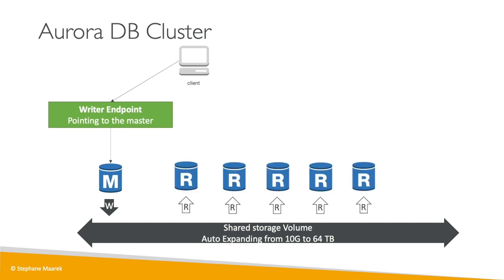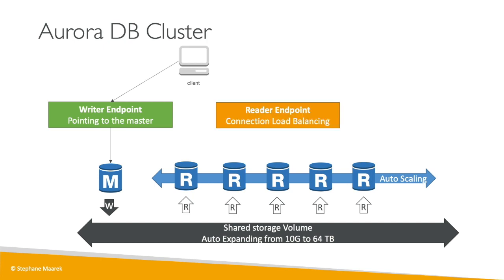You also have a lot of read replicas, and you can set up auto-scaling on top of them so you always have the right number — anywhere from 1 to 15. Because auto-scaling makes it hard for applications to track read replica URLs, there is a reader endpoint. The reader endpoint provides connection load balancing and connects automatically to all the read replicas. Anytime a client connects to the reader endpoint, it gets connected to one of the read replicas. Note that load balancing happens at the connection level, not the statement level.